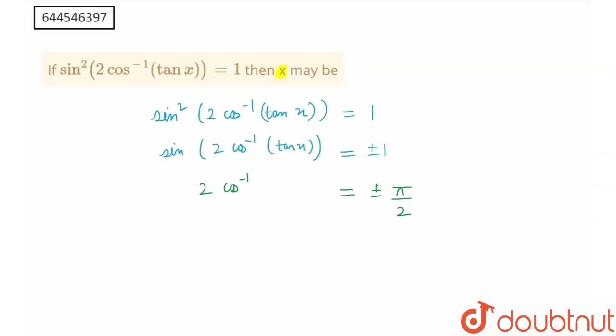And here it would be 2 times cos inverse tan of x. Now, I can write this as cos inverse tan x is equal to plus minus pi by 4.